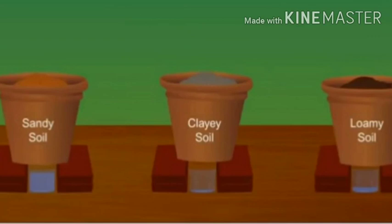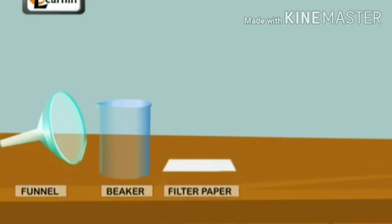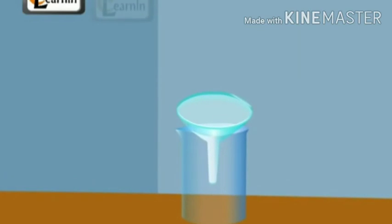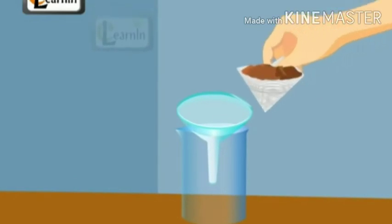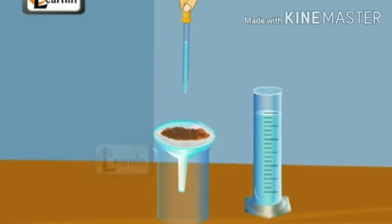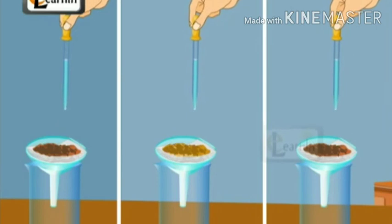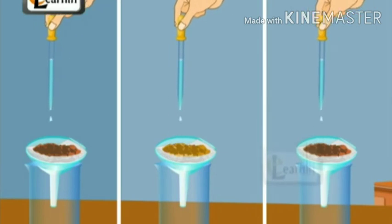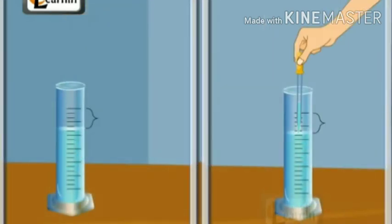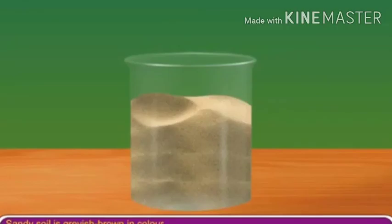For the next experiment, we need a funnel, a beaker, filter paper, soil samples, and a dropper. Take a funnel and place it on a beaker. Fold a filter paper, fill it with 50 grams of soil, and place it in the funnel. Pour water all over the soil using a dropper, keep pouring until water begins to drip from the funnel. Record all results and notice that the water retention capacity of all soils differs. In sandy soil, the grains are big and allow water and air to pass through.